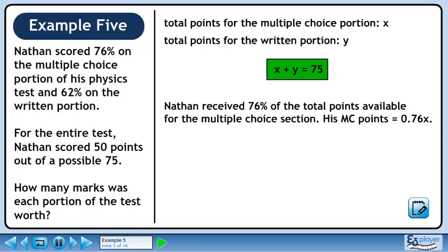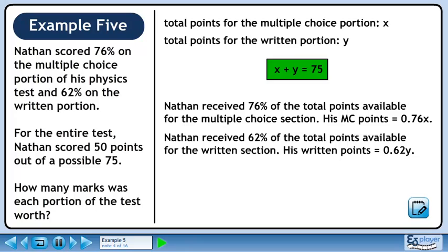Nathan received 76% of the total points available for the multiple choice section. His multiple choice points equals 0.76x. Nathan received 62% of the total points available for the written section. His written points equals 0.62y.